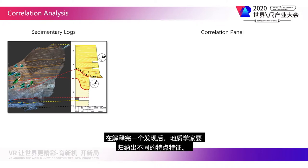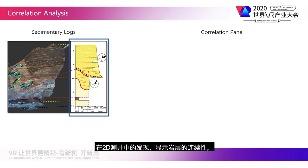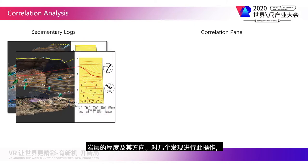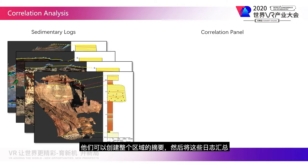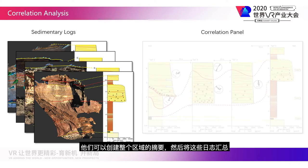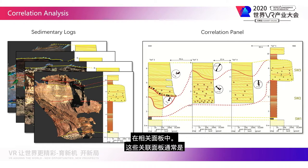After interpreting an outcrop, geologists want to summarize the different characteristics of an outcrop into a 2D log, showing the succession of rock layers, the thickness of rock layers, and the orientation. Doing this for several outcrops, they can create a summary of a whole area, and these logs are then summed up in a correlation panel.